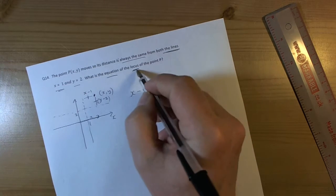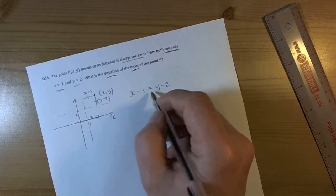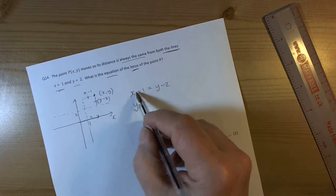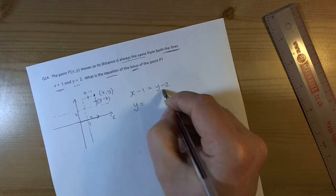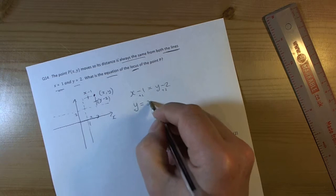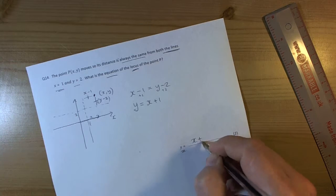Because they've asked for the equation of the locus, then we need a y equals situation, so we need to rearrange this to be y equals. So that means if I add 2 to both sides, then we can see that y is equal to x plus 1. So here we've got y equals x plus 1.